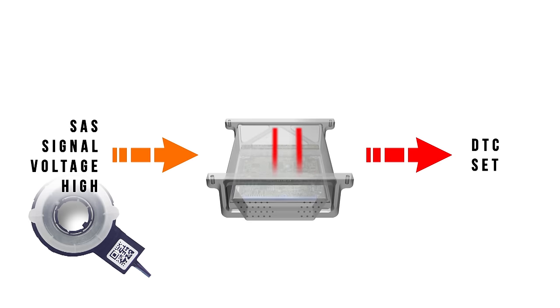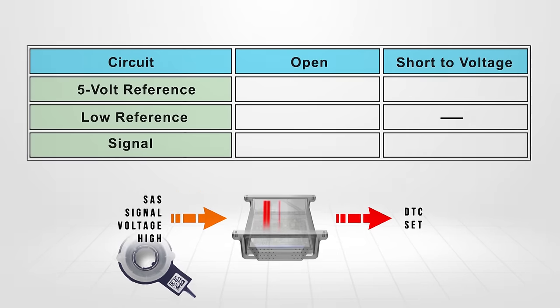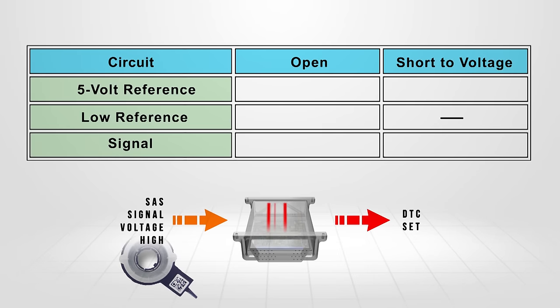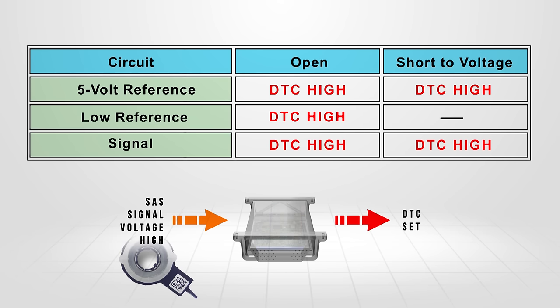A steering angle sensor signal voltage high DTC will be set if the signal voltage exceeds a predetermined level. This may be caused by an open or short to voltage within the sensor, harness, or ECM.